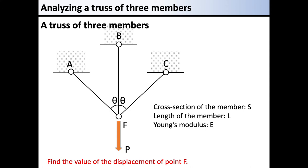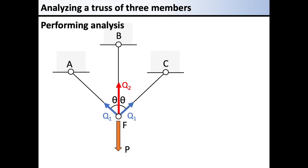The angles of AFB and CFB are both theta. As a flow of the solution to this problem, we start by defining the actual forces acting on the three members as unknowns, then determine the conditions between these unknowns and external force P. We define Q1 as the actual force acting on the left and right members, and Q2 as the actual force acting on the center member.